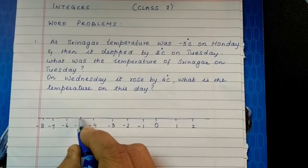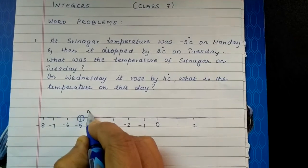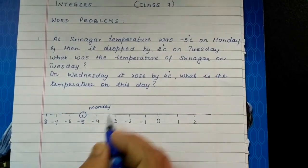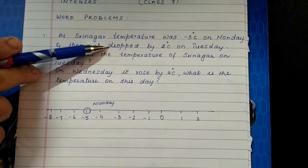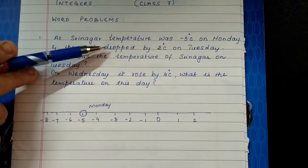They are telling us on Monday it was minus 5 degrees, and then it dropped by 2 degrees Celsius. So dropped means what, children? Dropped means minus. It fell. The temperature fell.